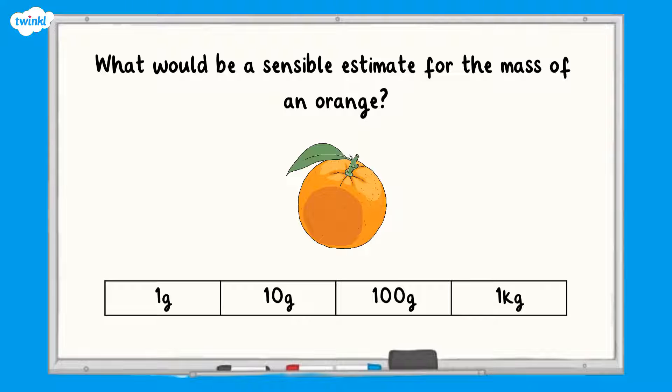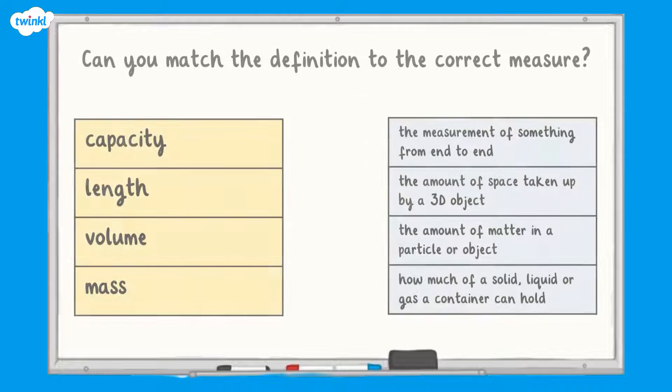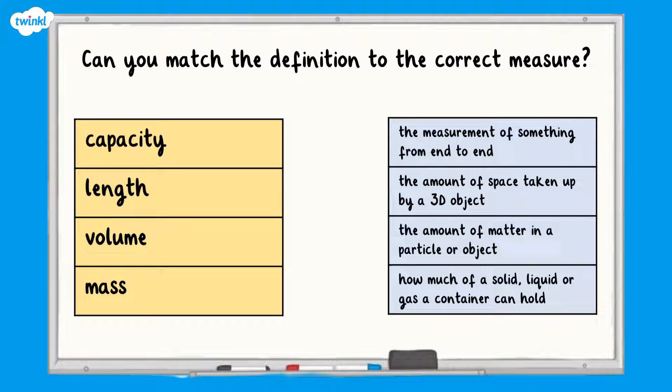All done? A sensible estimate for the mass of an orange would be 100 grams. Now it's your turn. Pause the screen here and have a go at this question. Just press play again when you are ready to continue.